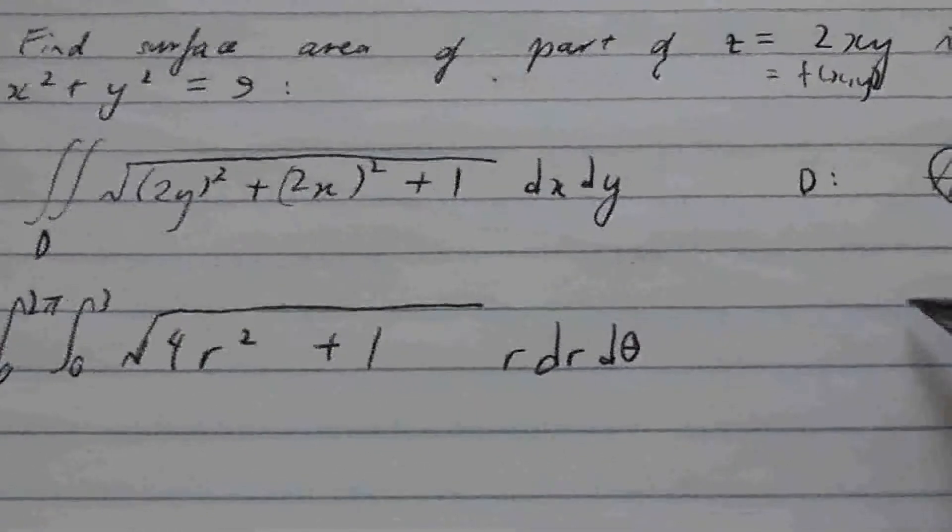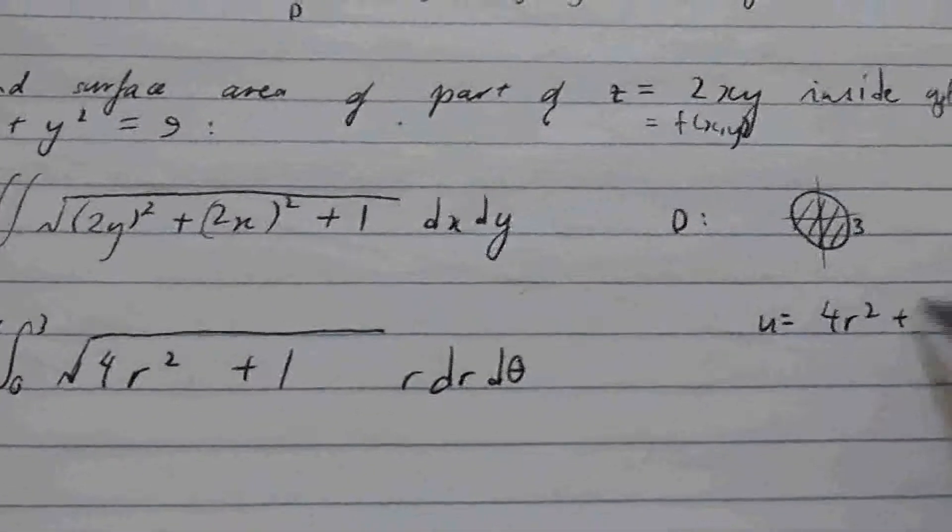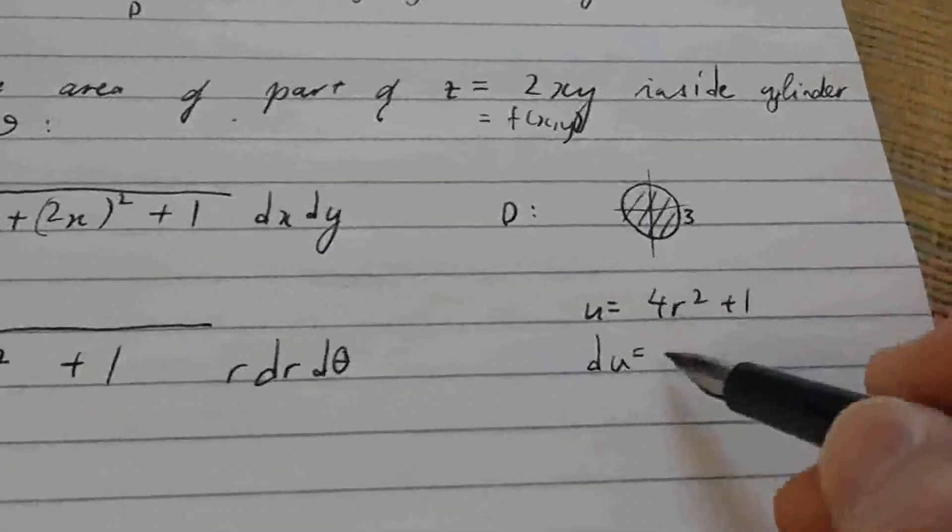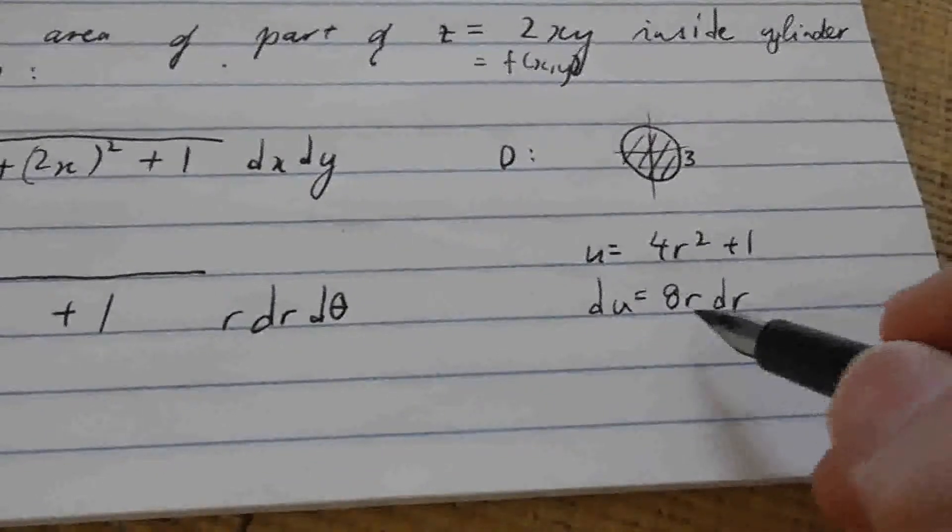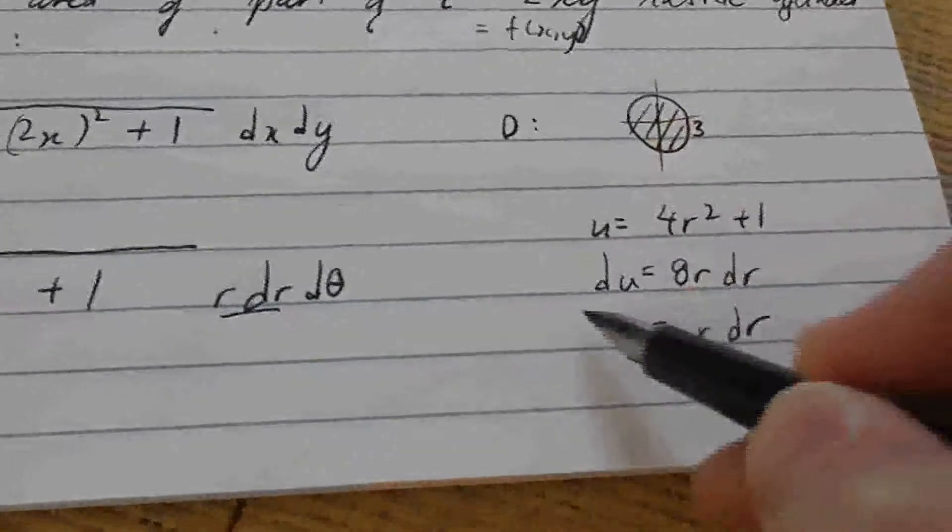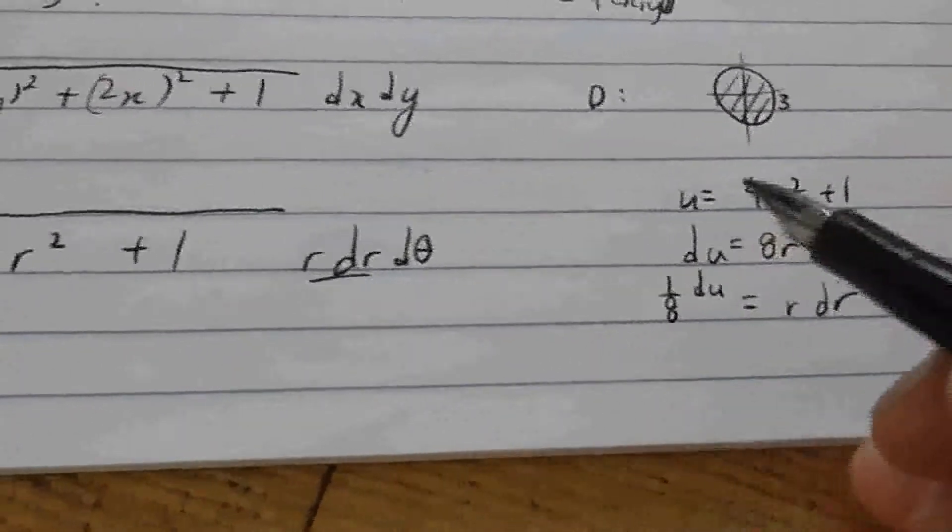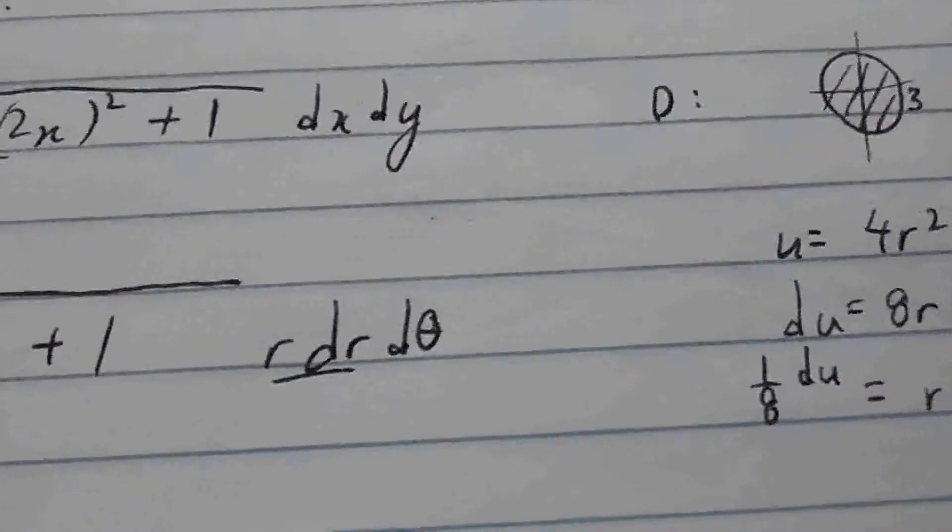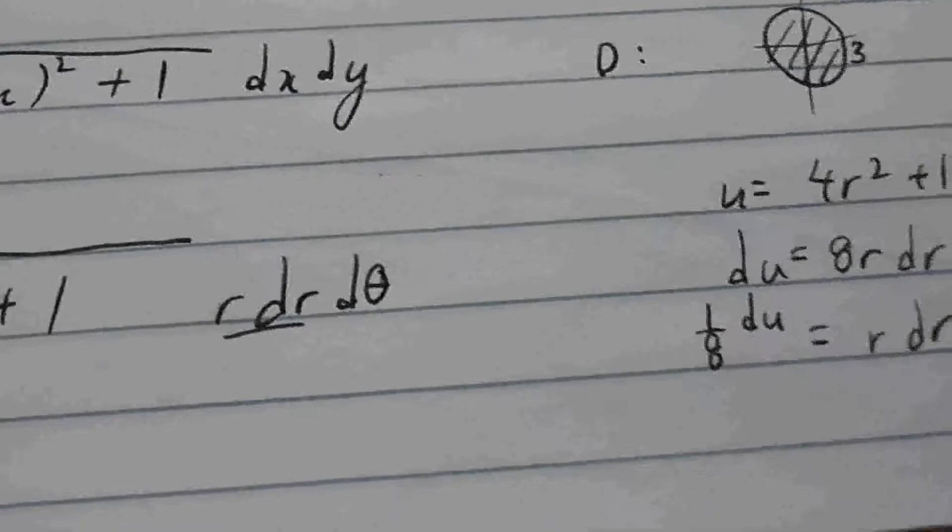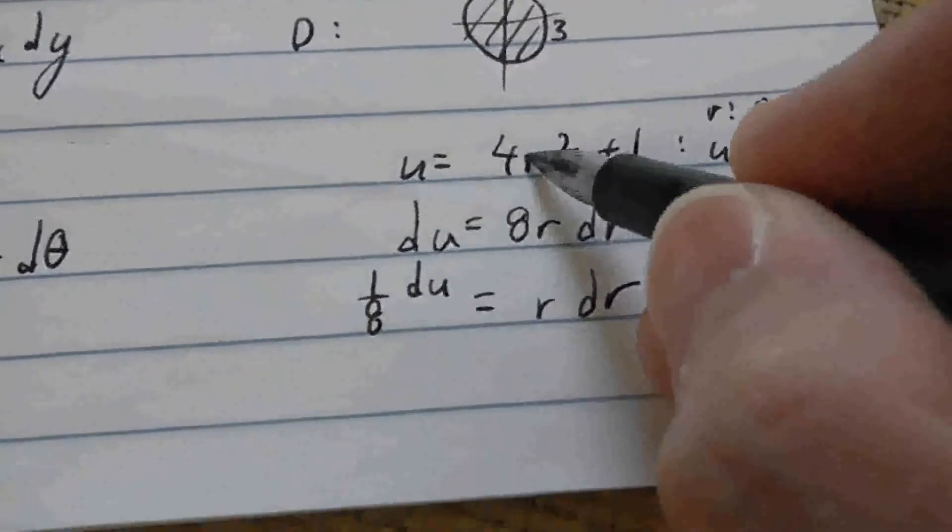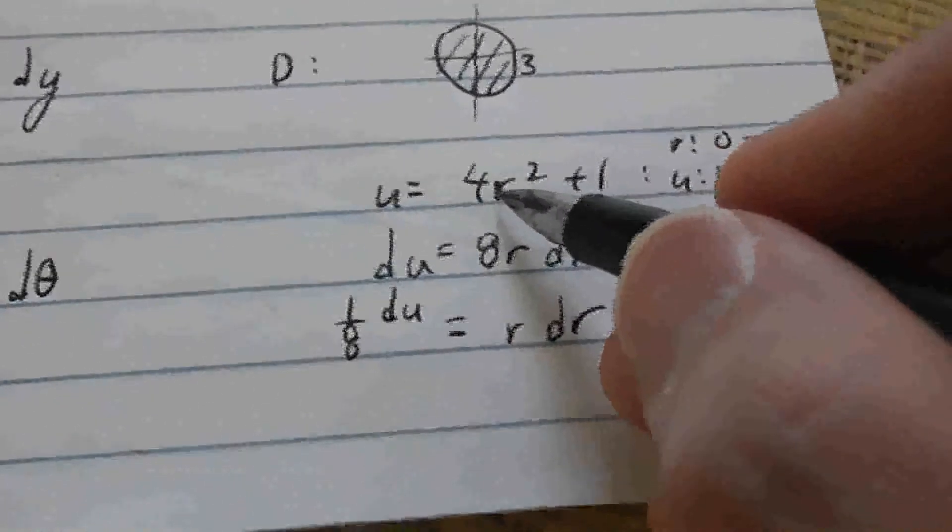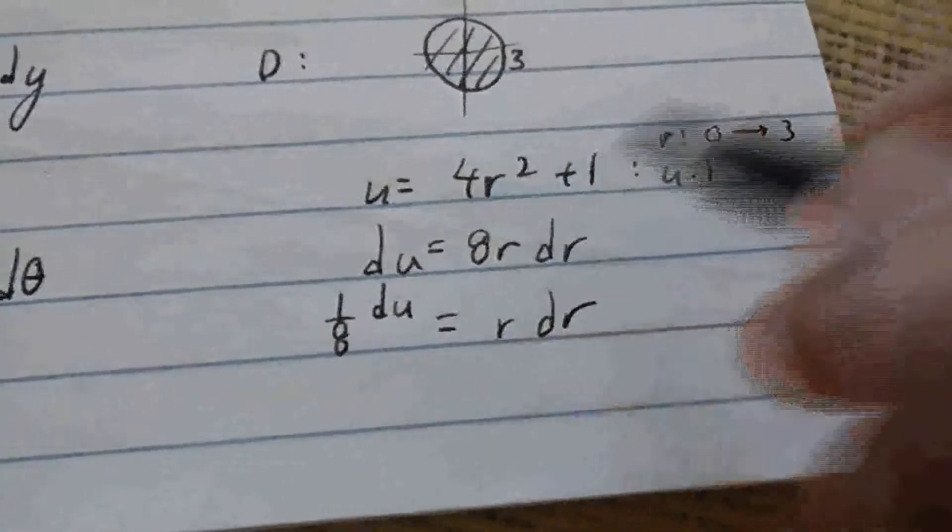So we shall make a substitution. Again, we have an inside function that is 4r squared plus 1. Let's call that u. So du is going to be 8r dr. So we can divide by a constant in this equation, not by a variable. So r dr, which is what we have here, is du times 1 over 8. And because we have a definite integral, let's change the bounds. So r goes from 0 to 3. When r is 0, then u is 1. When r is 3, then u is 4 times 9 plus 1. Okay, 37.